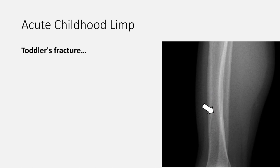Now let's move to one of the most important topics — acute childhood limp. There are several causes, and we will talk about the most important ones. Fractures are one of the most common causes. There is a type of fracture called toddler's fracture — a subtle undisplaced spiral fracture of the tibia typically seen in preschool children, usually caused by a sudden twist, often after an unwitnessed fall. This commonly affects new walkers. Affected toddlers present with difficulty or refusal to bear weight.